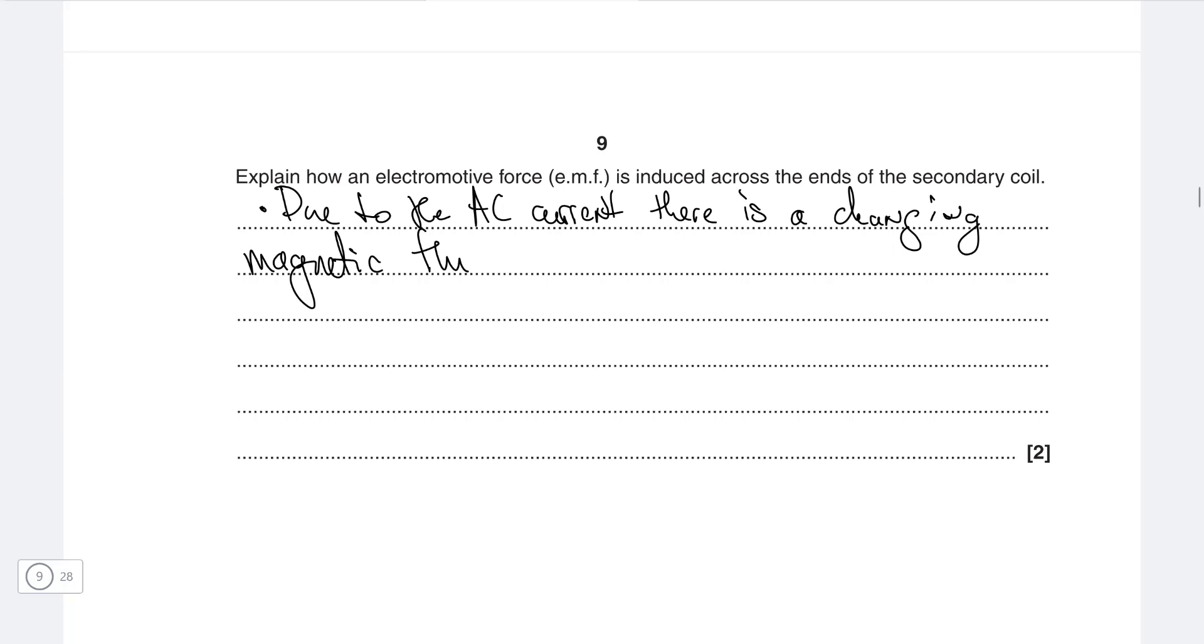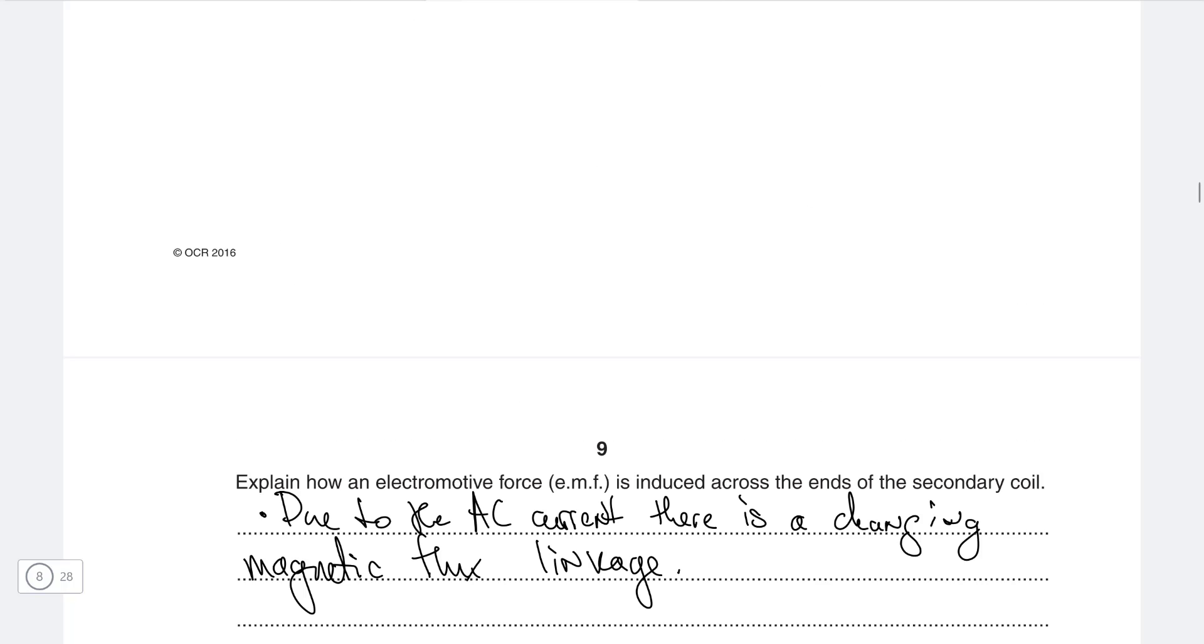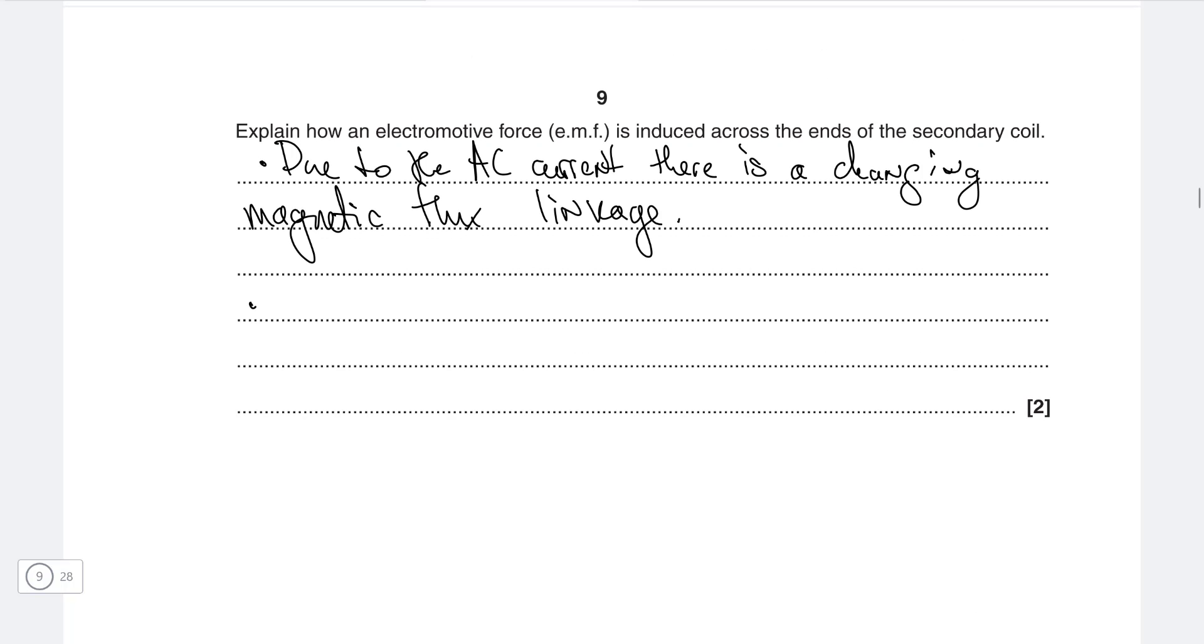Let's refer to the soft iron core as well, which is part of the diagram, so I will include it in my answer. We can say that magnetic flux linkage is linked to the secondary coil by or via the soft iron core.